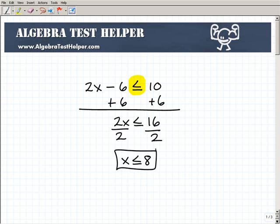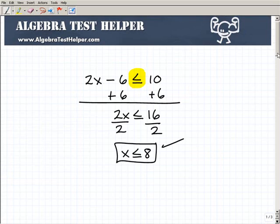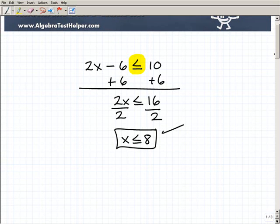Okay, so I'm basically done. I got x is less than or equal to 8, so this would be an acceptable answer, but more often than not, we like to express the solutions to an inequality on a graph. Usually I like a number line.